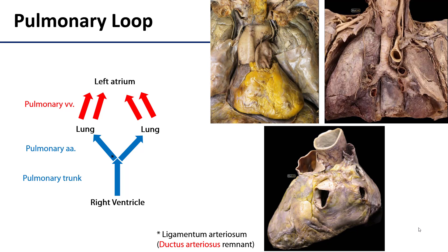This process begins in the right ventricle. From the right ventricle, blood leaves through the semilunar pulmonary valve and moves into the pulmonary trunk, as we can see here in this cadaveric image. The pulmonary trunk divides into the main pulmonary arteries.